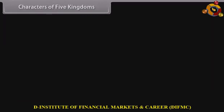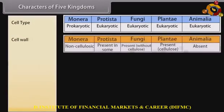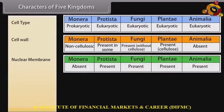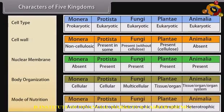Characters of the five kingdoms are compared by cell type, cell wall, nuclear membrane, body organization, and mode of nutrition.